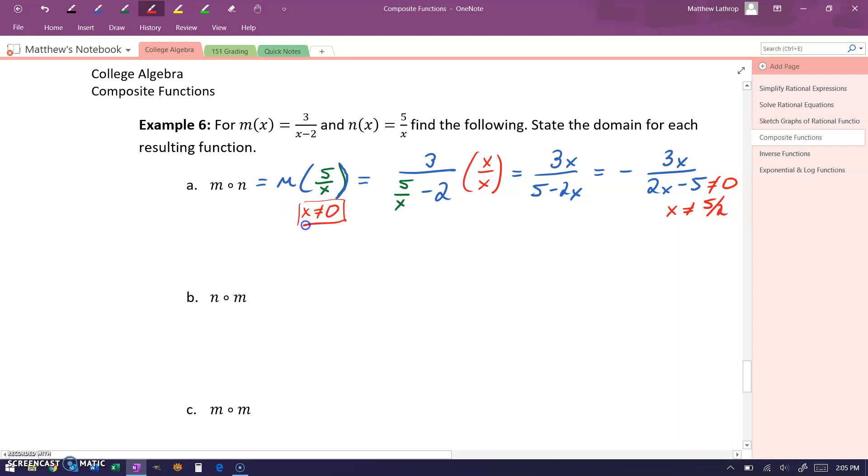So this function composition has two restricted values, x can't be equal to 0, and x cannot be equal to 5 halves.